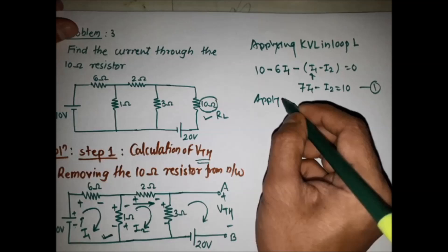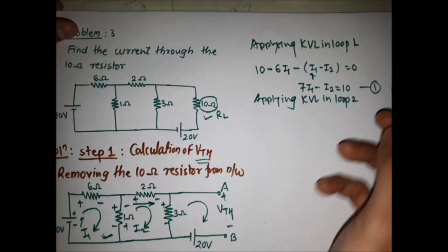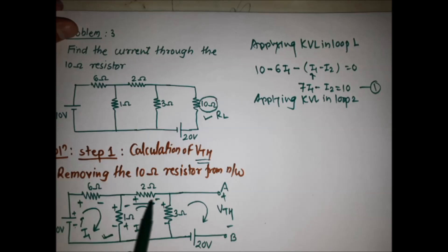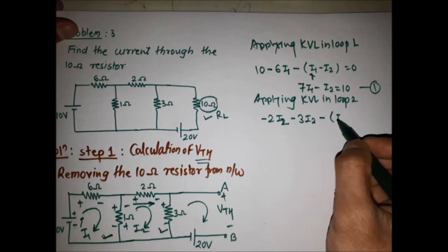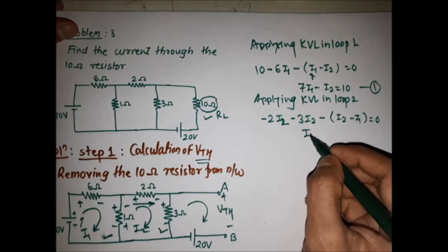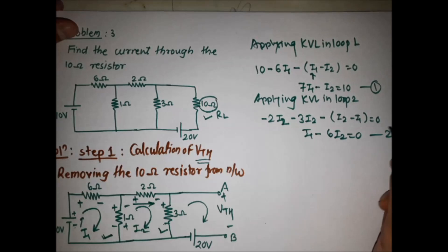Applying KVL in loop 2: starting from the 2 ohm resistor, current flows plus to minus, giving -2·I2. Through the 3 ohm resistor, plus to minus again, giving -3·I2. Through the 1 ohm resistor, subtracting I1 from I2 for the second loop gives -1·(I2 - I1). Setting the sum to zero and solving gives: I1 - 6I2 = 0. This is equation 2.